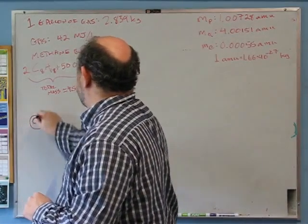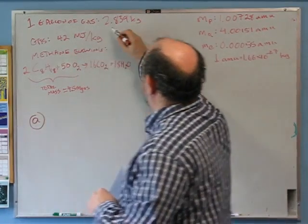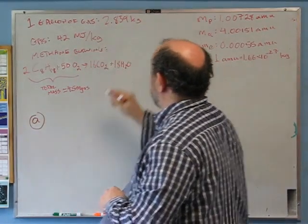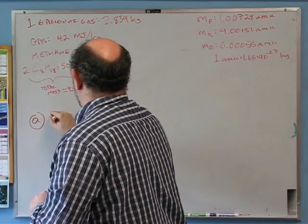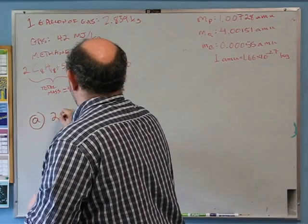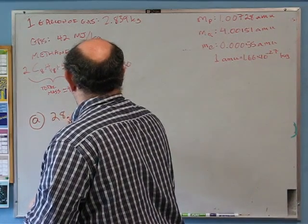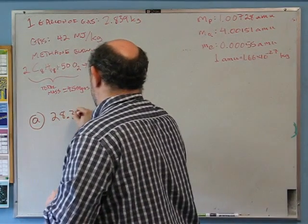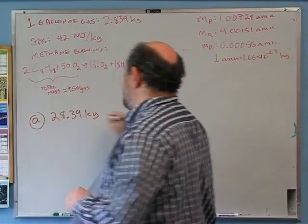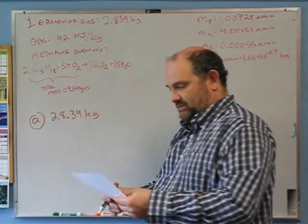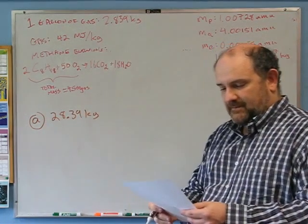That's easy because in the last problem we calculated one gallon is 2.839 kilograms. So a 10-gallon tank gives us 28.39 kilograms of gasoline.